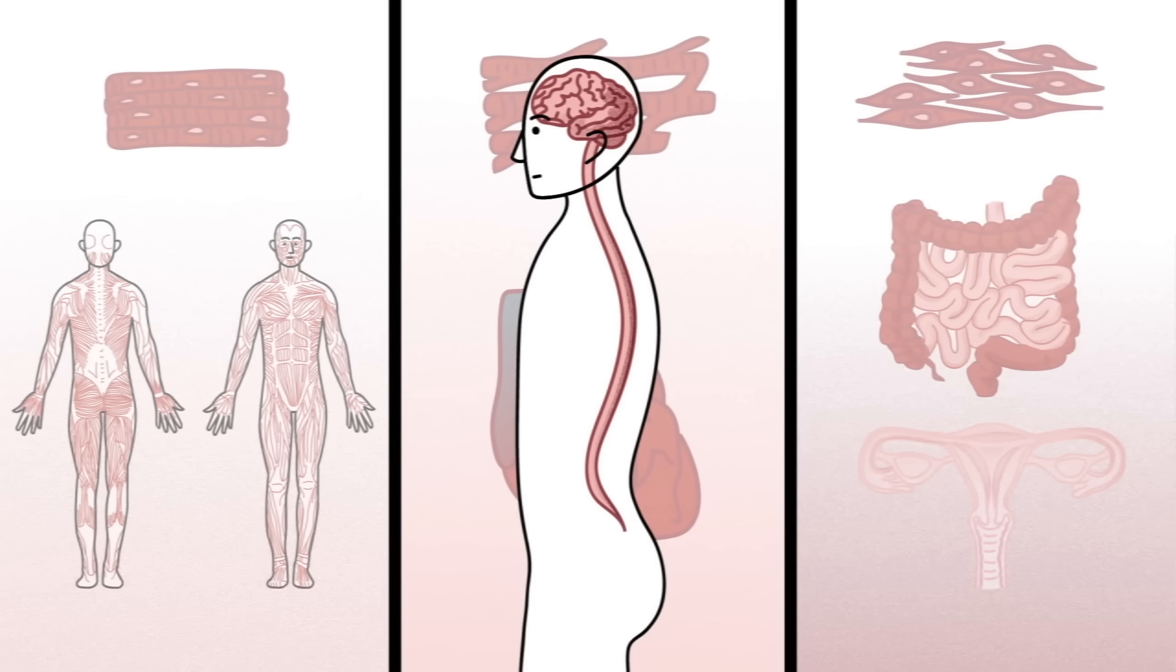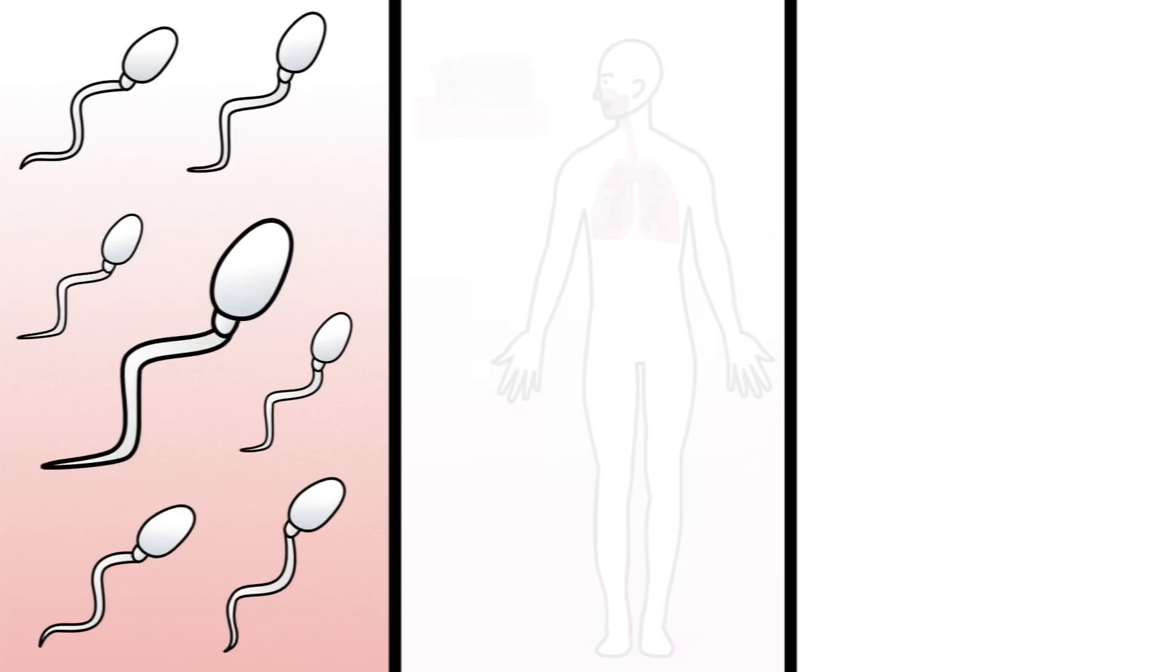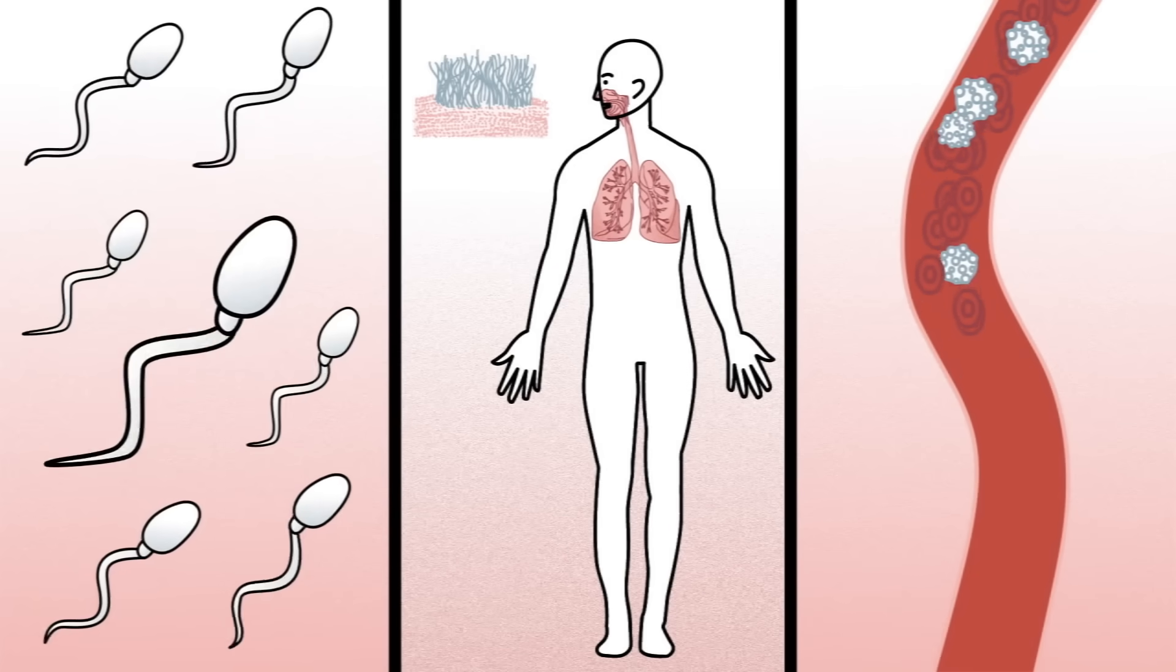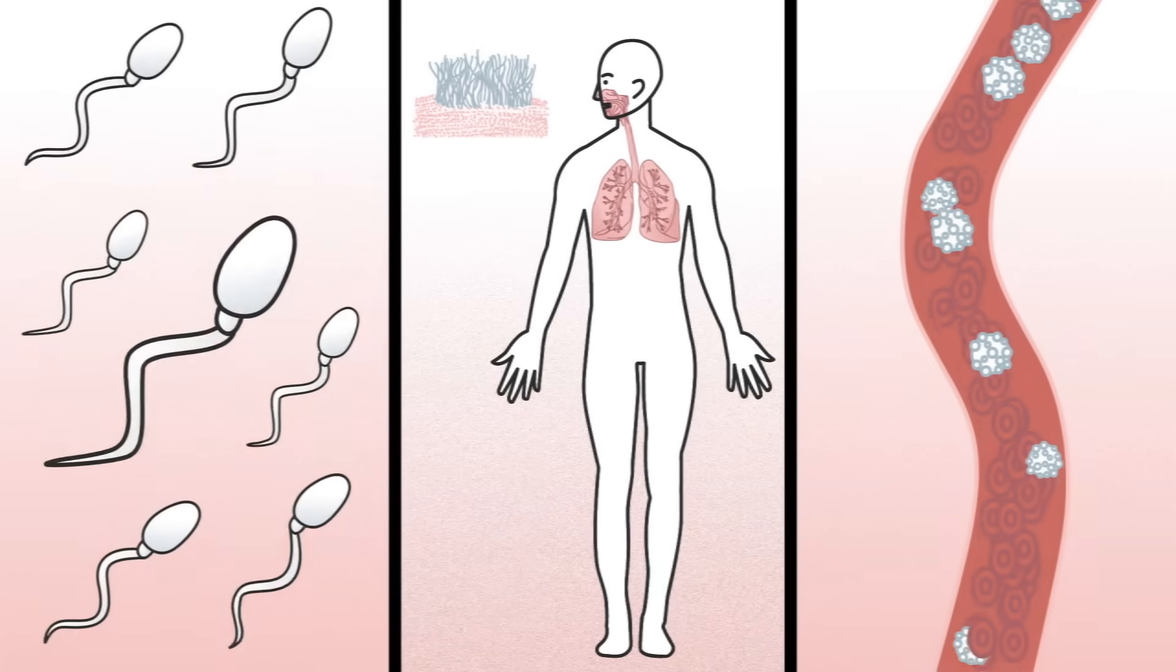This produces almost all the movements we make. Some of the only parts of the body whose motions aren't governed by the muscular system are sperm cells, the hair-like cilia in our airways, and certain white blood cells.